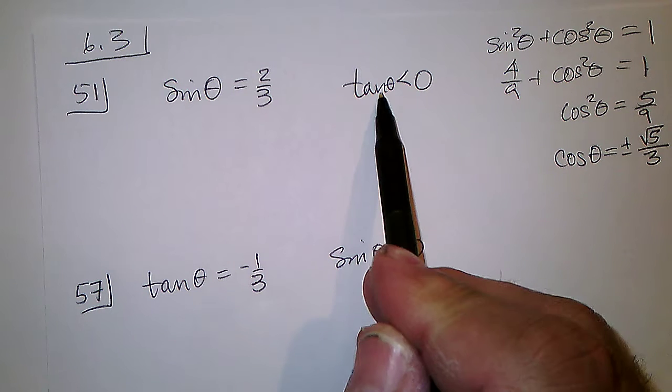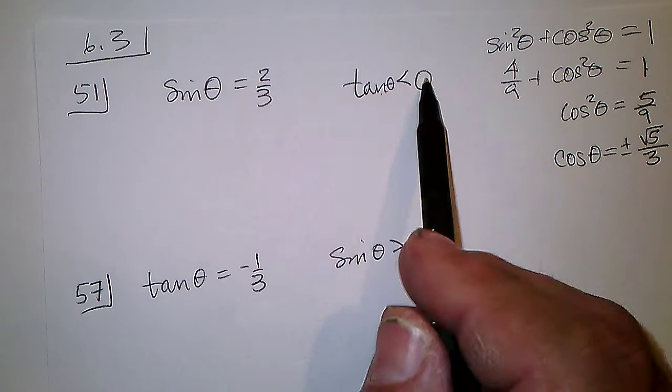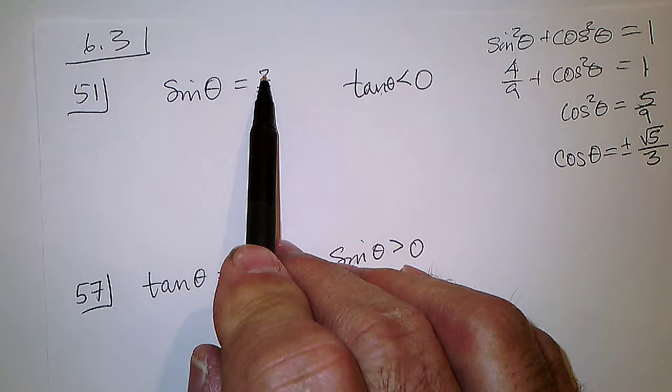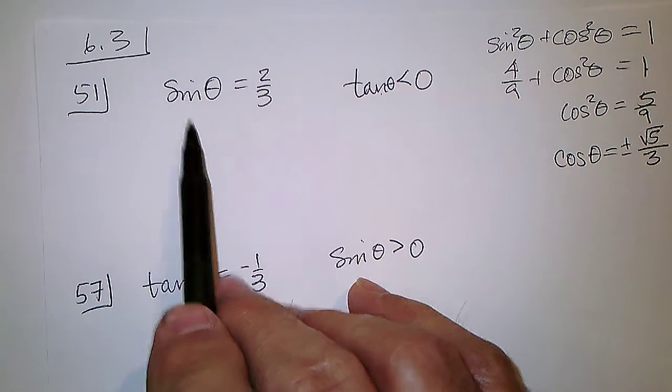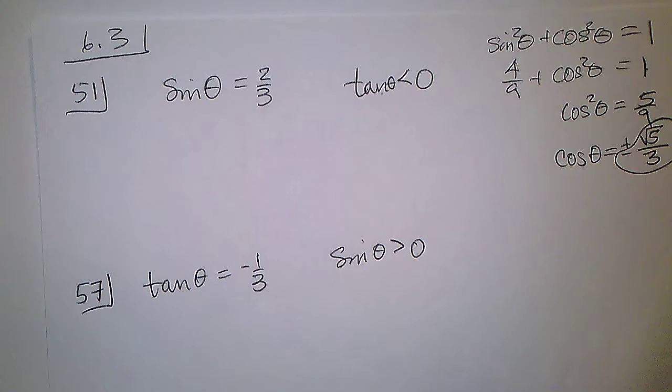But if the tangent is going to be negative, less than zero, and the sine is positive and tangent is sine over cosine, the cosine better be negative.